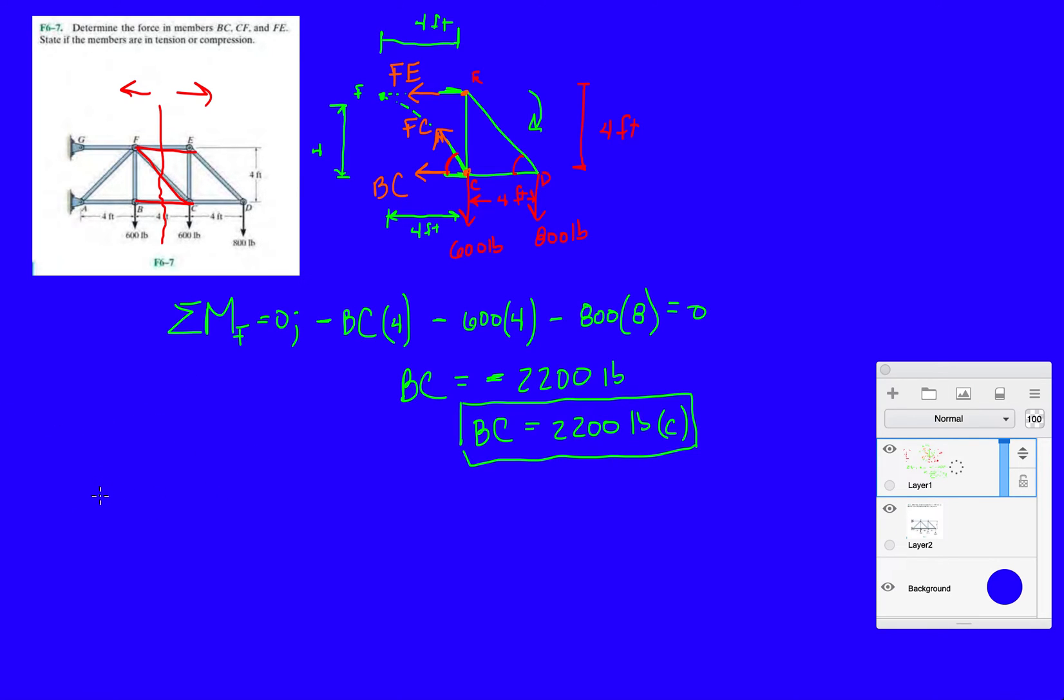The next thing will be to take another moment. And again, locate the point where you can cancel out the most forces. Let's give you three seconds. Three, two, one. You should have assumed point C, or guessed point C, or not even guessed, just gone with point C from the get-go. Point C allows you to eliminate BC, FC, and the 600 pounds on C already.